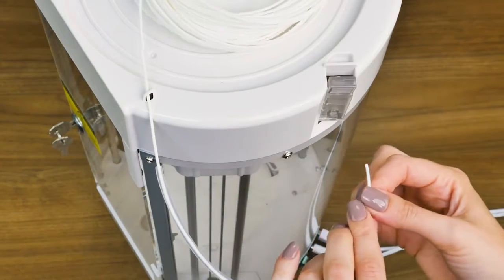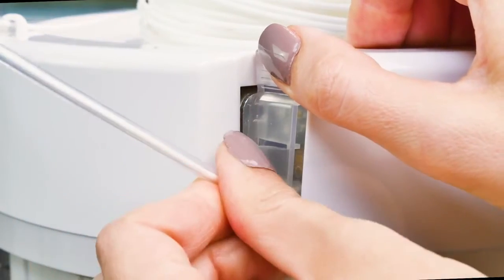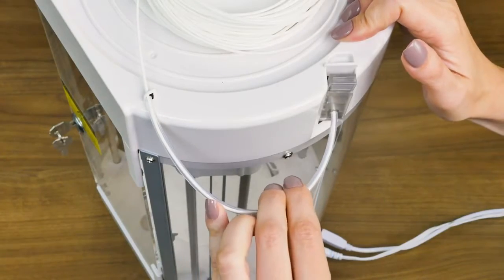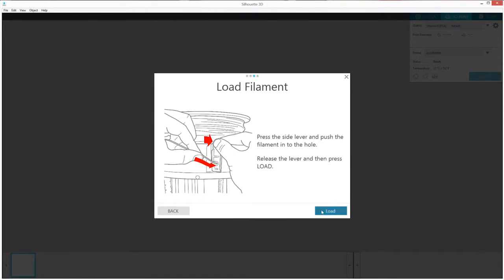Once the filament has been fed through the filament tube, press the tab on the filament clip to open the hole where you can insert the filament. You'll know it's completely inserted when the filament comes to a stop. Then release the clip. Click Next in Silhouette 3D and then click Load.